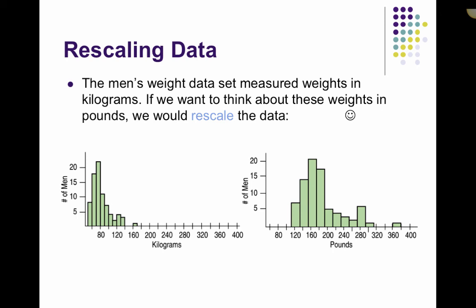To sum up: when you're shifting data, you're adding or subtracting a constant to every data value — it'll change any measure of position but leave measures of spread the same. Rescaling requires you to multiply or divide every data value by a constant, and that'll change both measures of spread and measures of center by that factor. That's it for today — see you in class tomorrow.